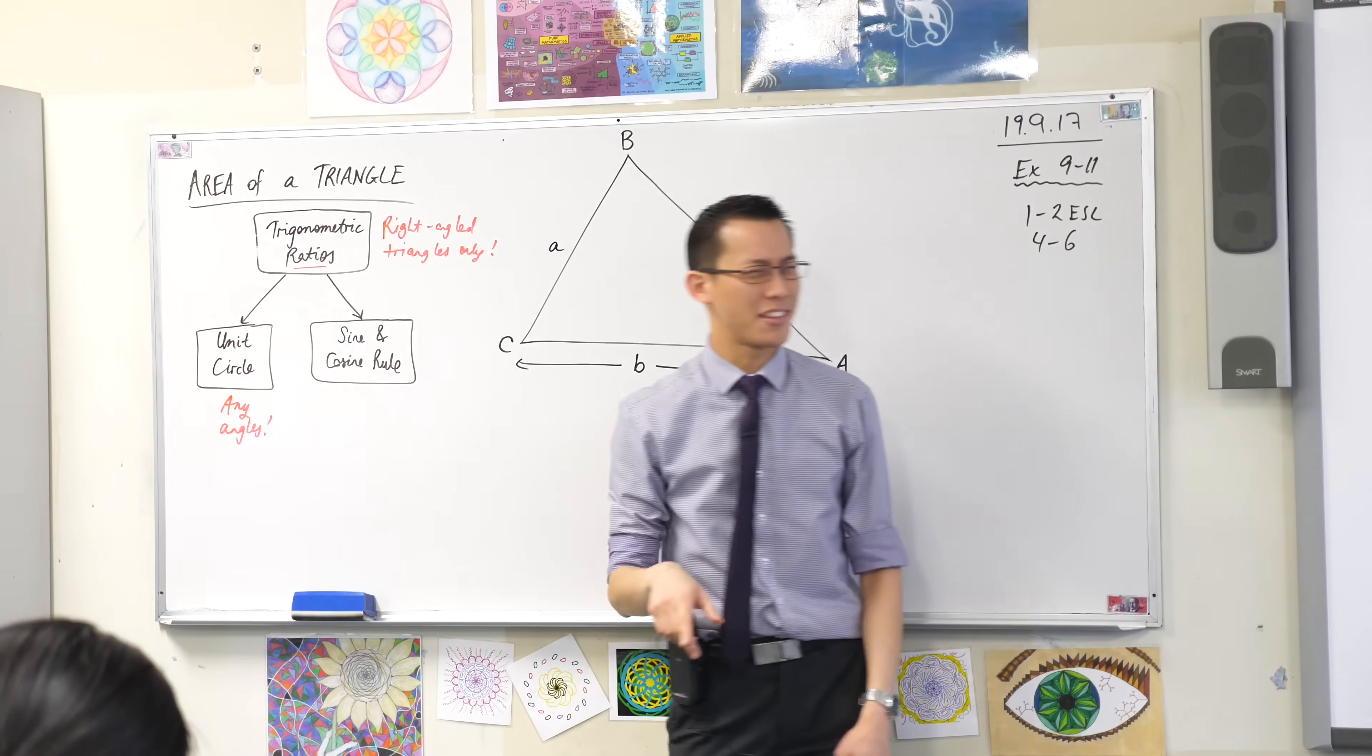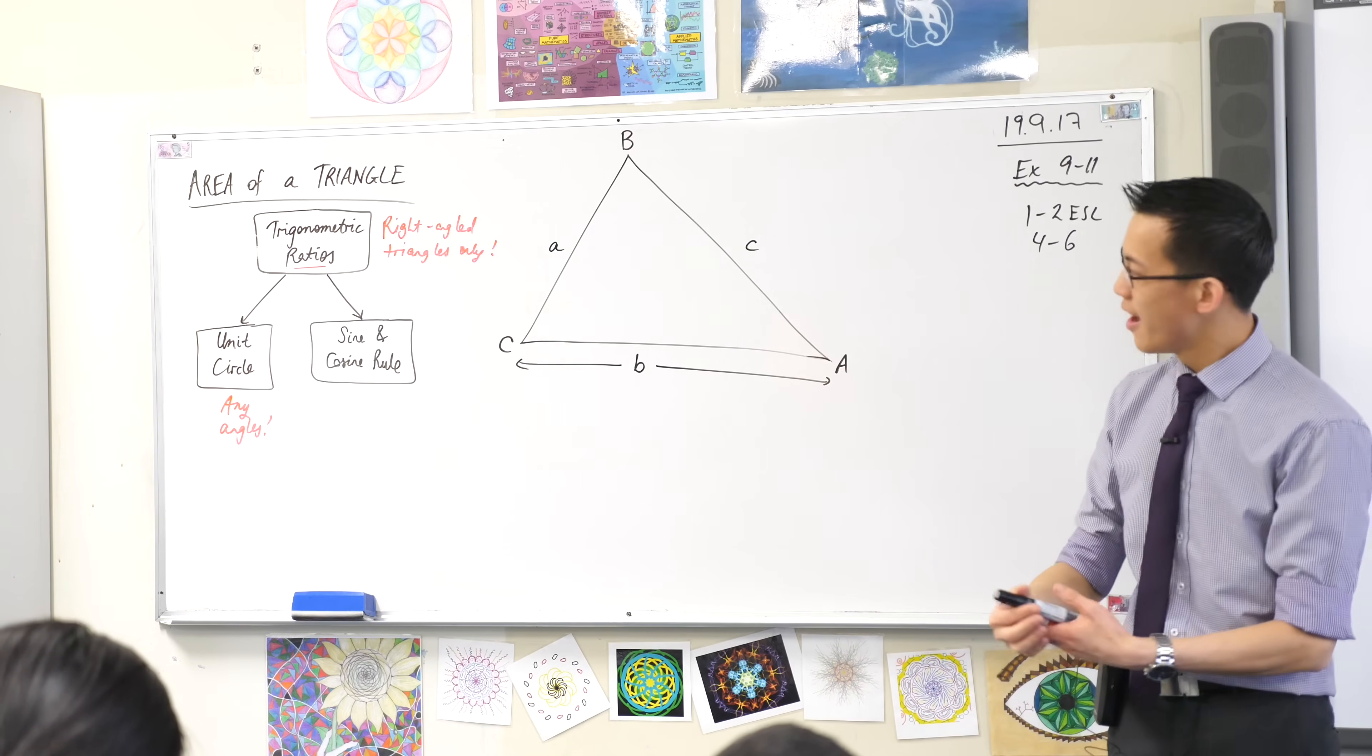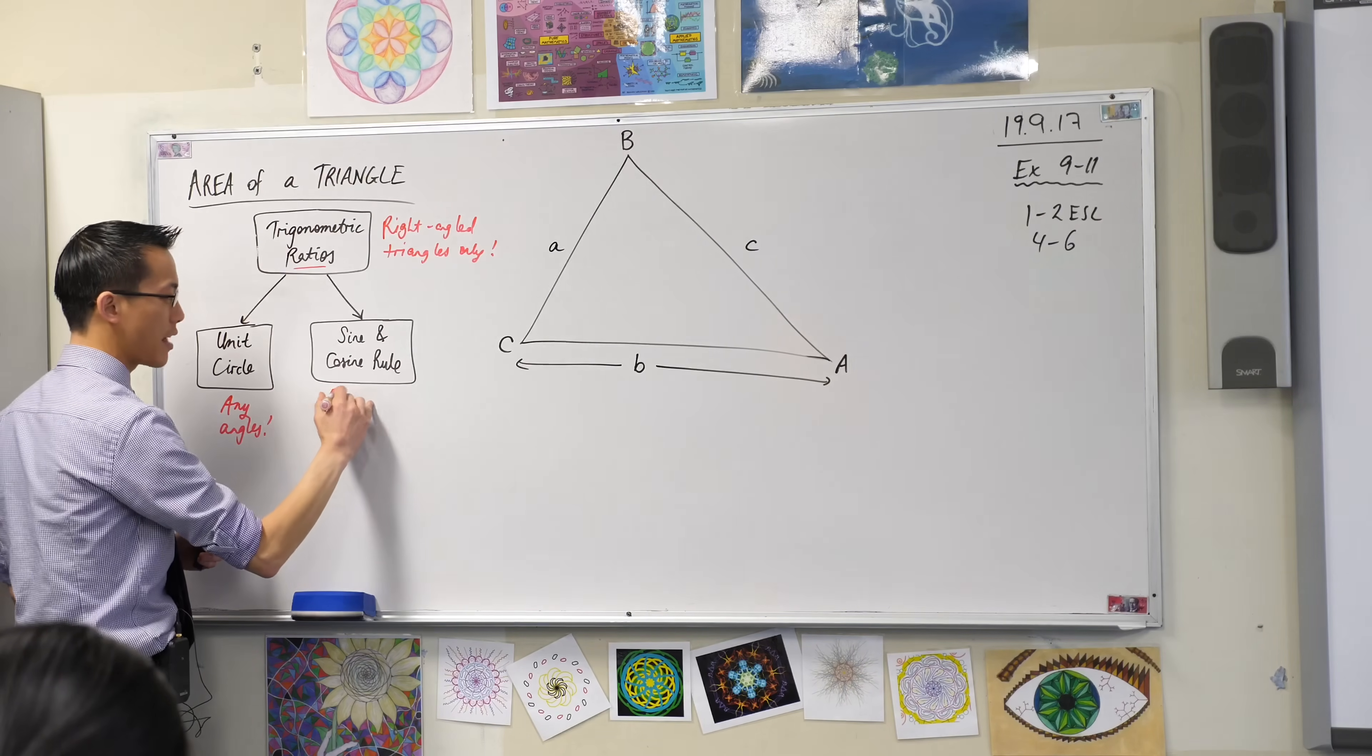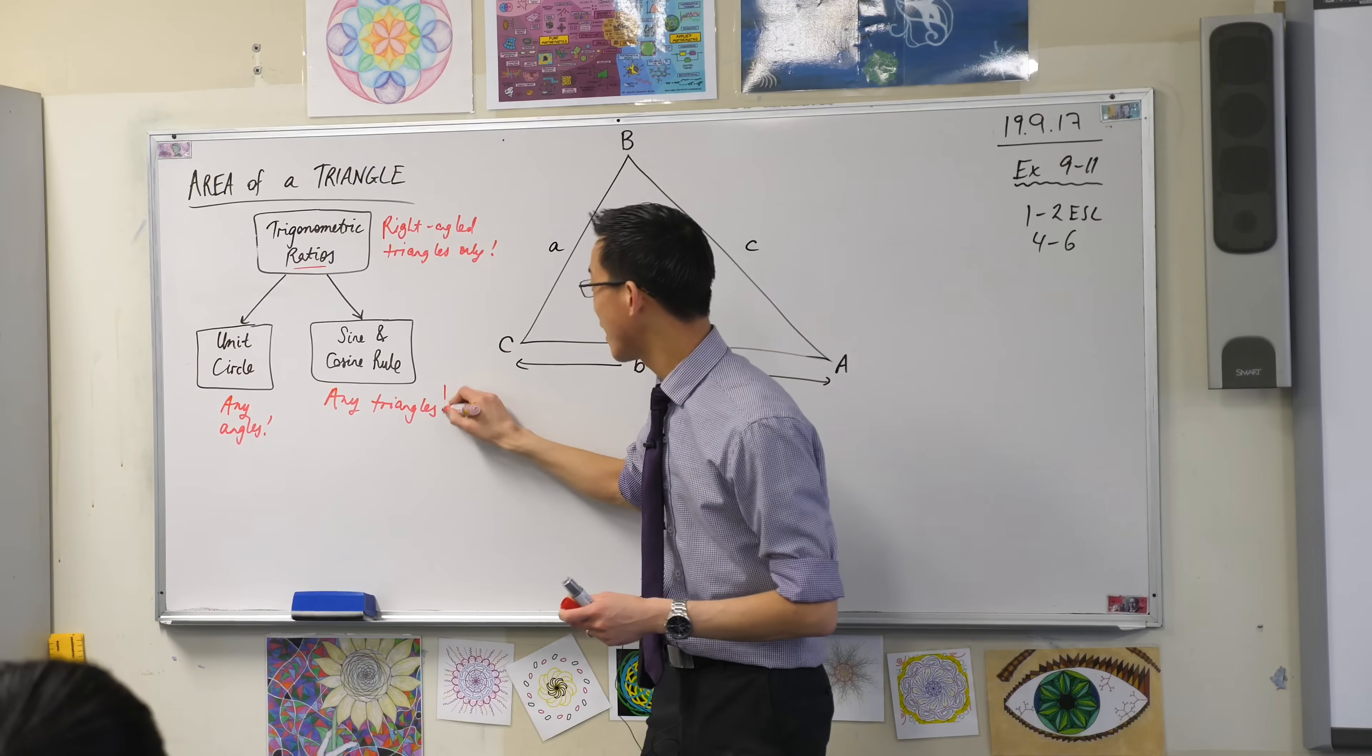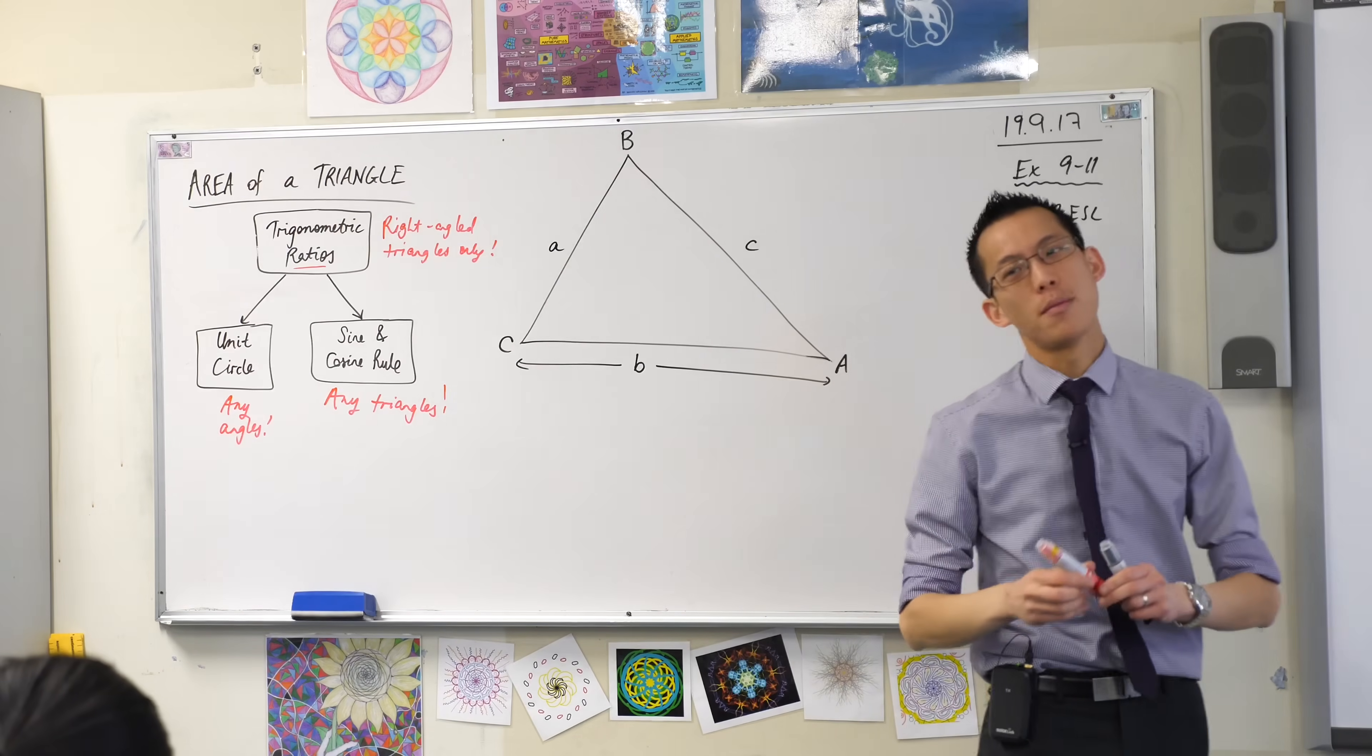We then introduced the sine and the cosine rule. I won't ask you to rewrite them because you've got them in your books already. But the point of introducing the sine and cosine rule was to say not just any angles, but now we can deal with any triangles. Even if your triangle doesn't have a right angle in it, as we needed up here, if your triangle doesn't have a right angle in it, no problem.